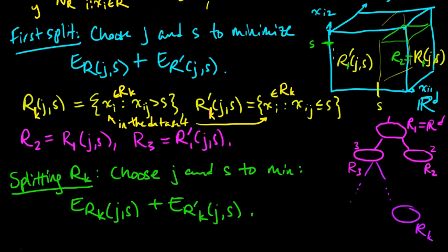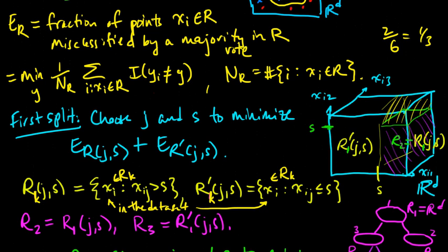So at the general step, we need to split R_k. We look over all dimensions, we look over all split points, and we choose the plane that minimizes this quantity, where R_k would be like this region here and R_k' might be this other region. We're minimizing the sum of the misclassification error that would arise by classifying the points in each of those two regions according to a majority vote in that region.